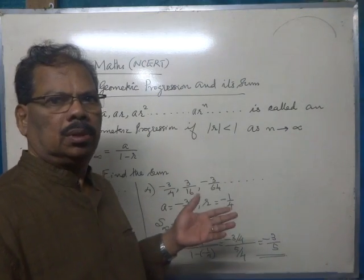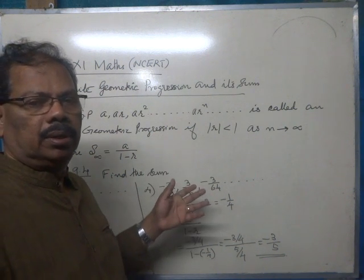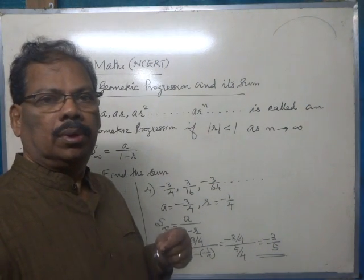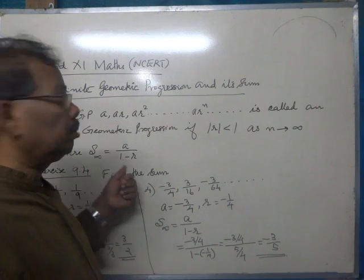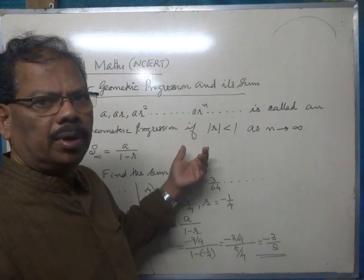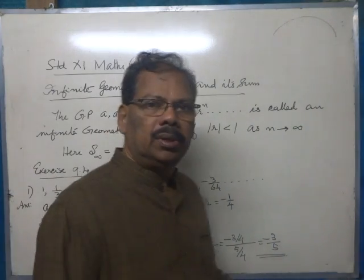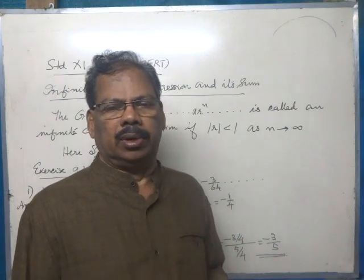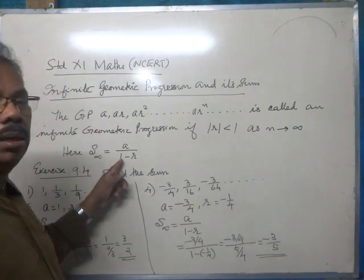Geometric progressions continues. There is an infinite geometric progression and the sum to infinity of an infinite geometric progression is given by S-infinity equals a divided by (1 - r), where the modulus of the common ratio is less than 1.